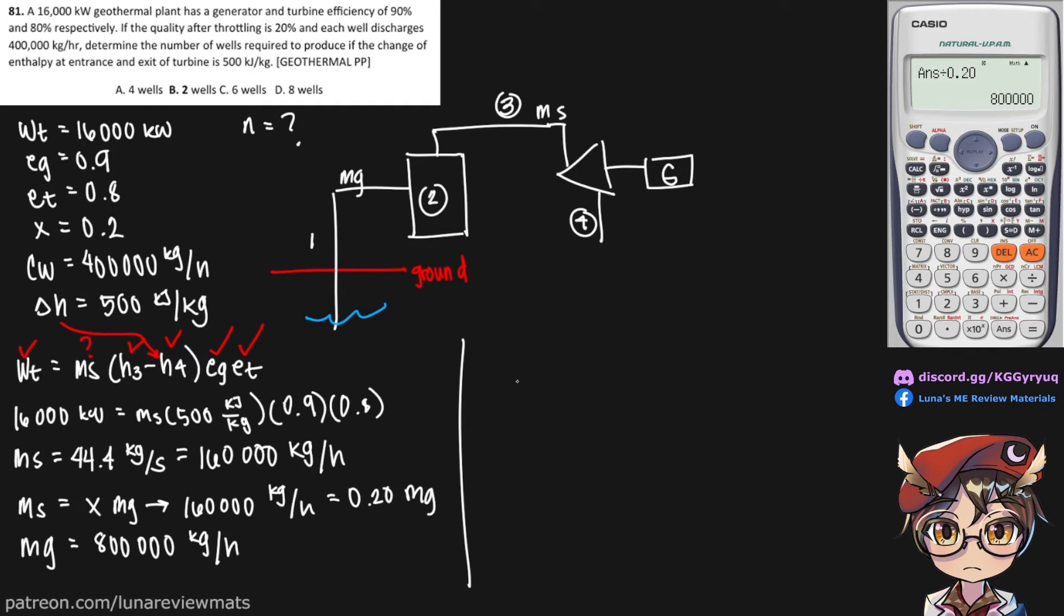So next, to determine our number of wells, n is simply equal to mg over the capacity of our well. And we already have both of these right here and right here. So we just need to put our values in. These are the same units, so they cancel out, and we end up needing two wells to produce 16,000 kilowatts of power for this power plant.